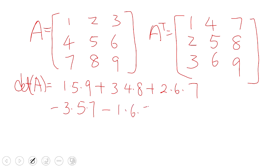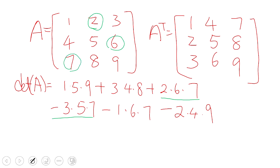So these are the six terms to compute the determinant of A. For example, the positive term 2×6×7: you pick the second element of the first row, the third element of the second row, and the first element of the third row. We call this a permutation.